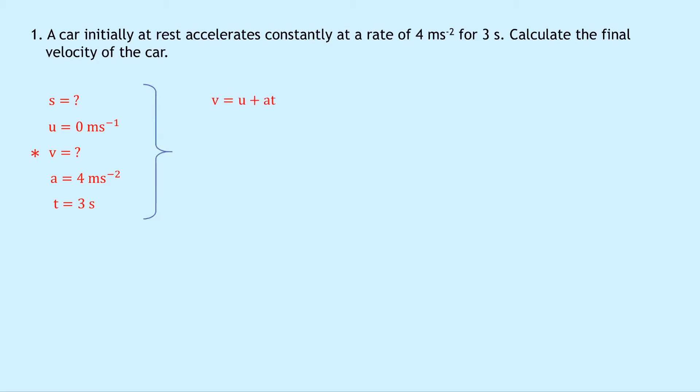So writing down our equation, we have V equals U plus AT. Substituting in the numbers, we get zero plus four times three, which gives us an answer of 12 meters per second.